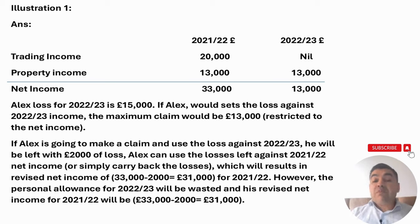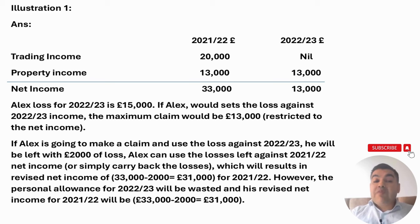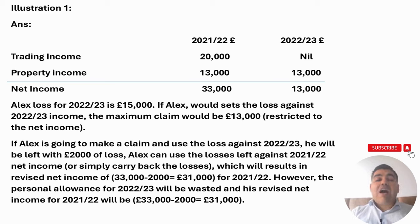If Alex decides to make a current year claim, he needs to use enough losses to completely wipe off the profit for 2022-23 — that is the tax law. As a result he will lose his personal allowance. The remaining £2,000 losses could be carried back and set against the profit of 2021-22, giving a revised net income for 2021-22 of £31,000. However this is not a beneficial advice for Alex.